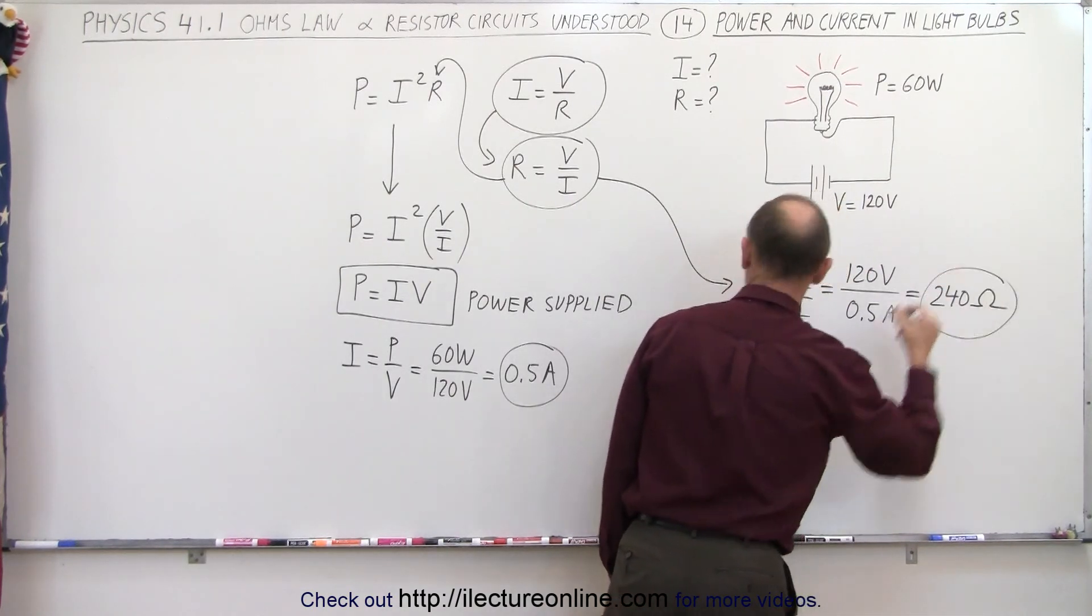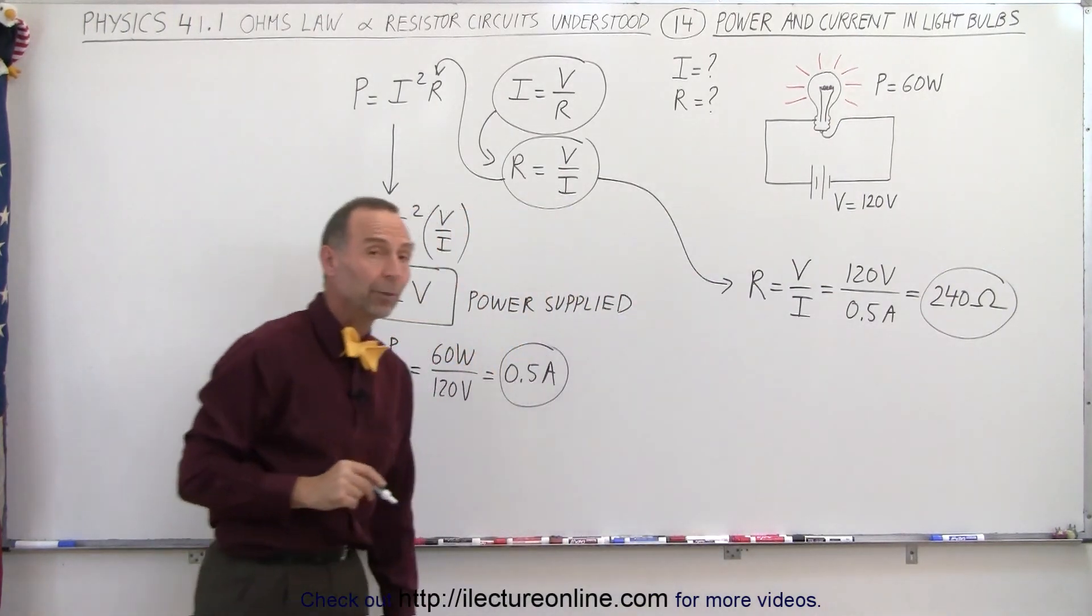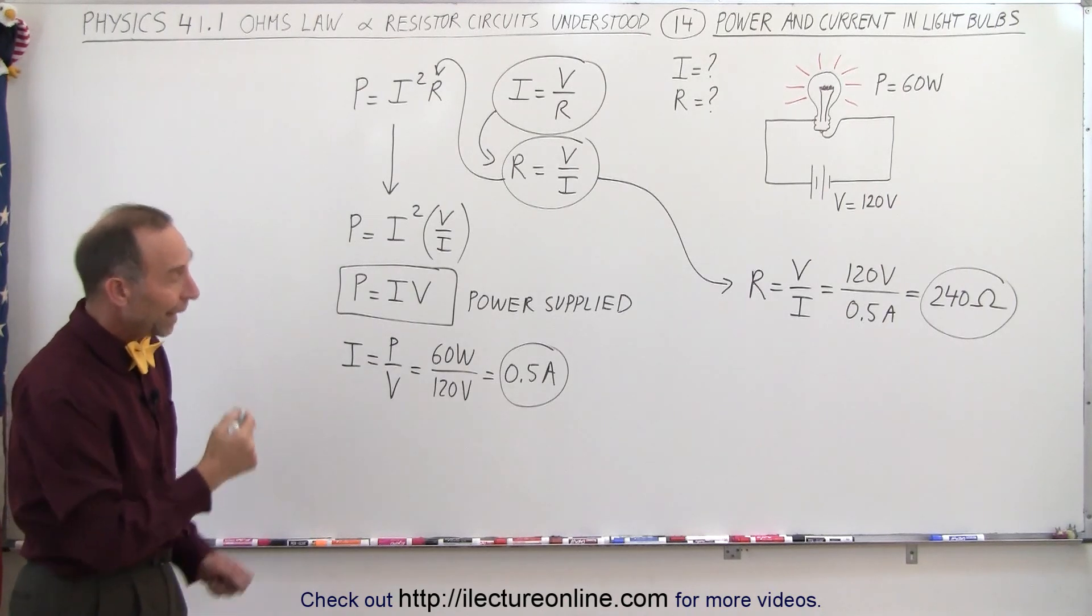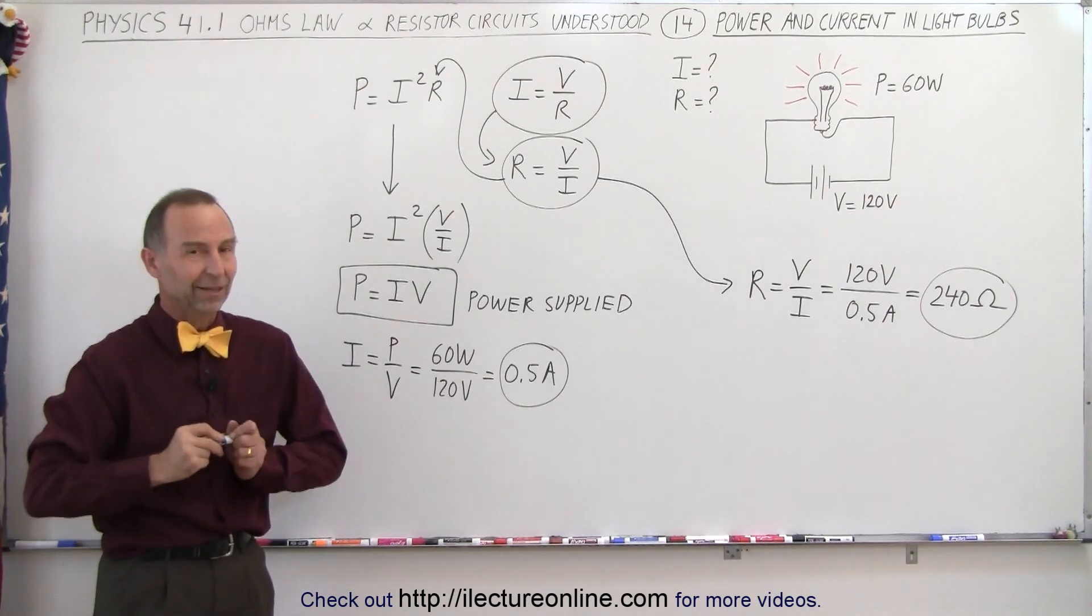And so that's how we find the current and the resistance of a light bulb given the power rating of the light bulb and the voltage that's applied, and that's how it's done.